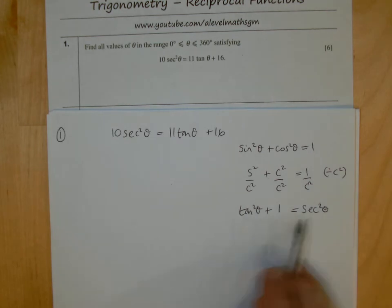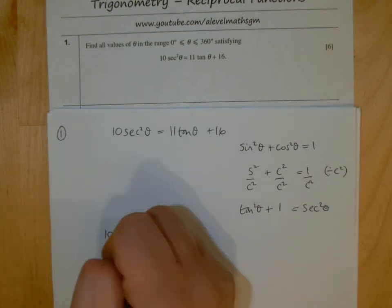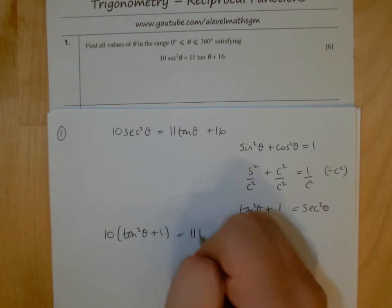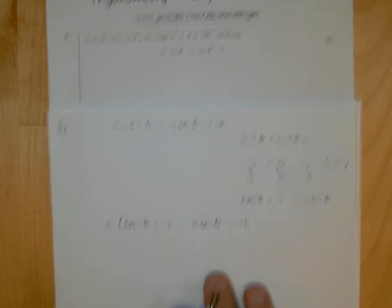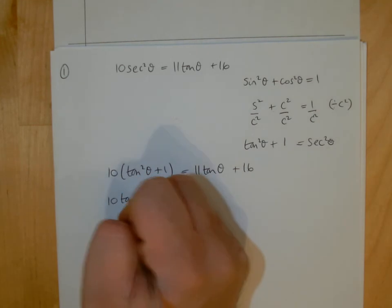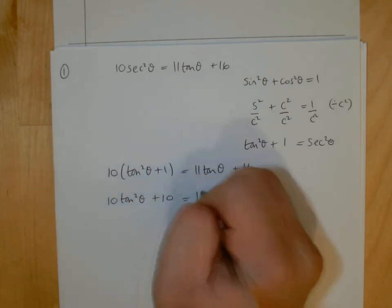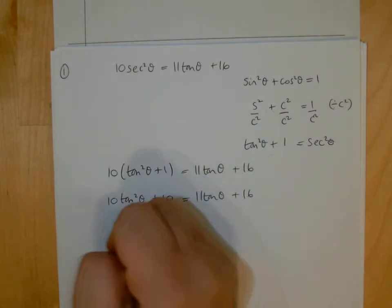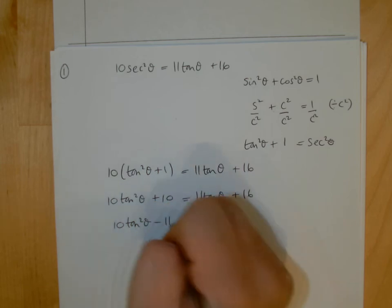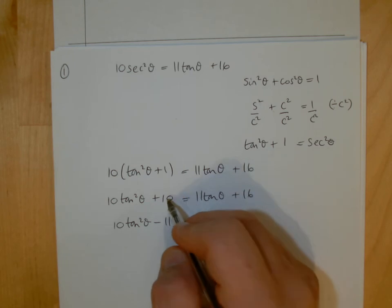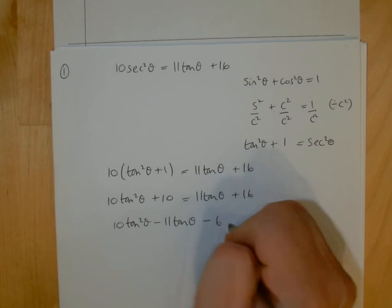So quite simply, we substitute this result for sec²θ in here. So I'll have 10(tan²θ + 1) = 11tan θ + 16. What's great is everything is in terms of tan. So expand the bracket, then get everything to the left-hand side: 10tan²θ - 11tan θ - 6 = 0. We've got ourselves a simple quadratic which we can solve.